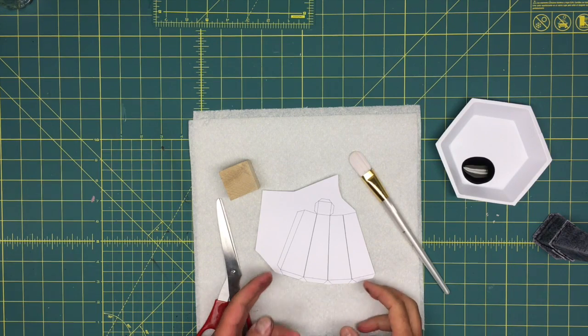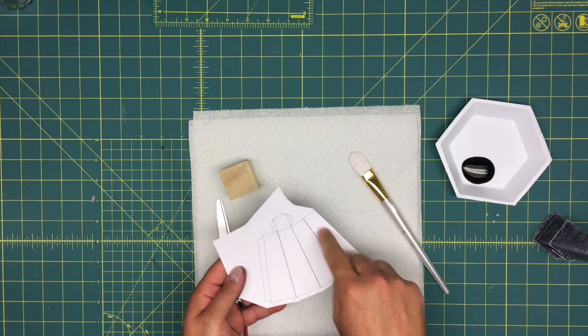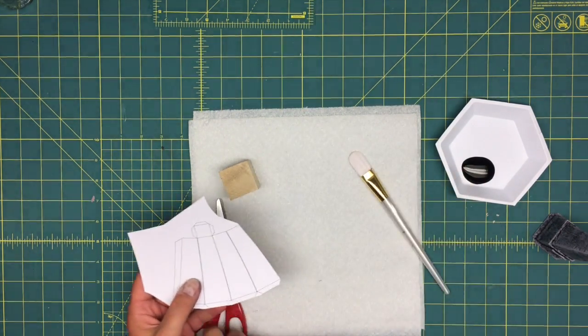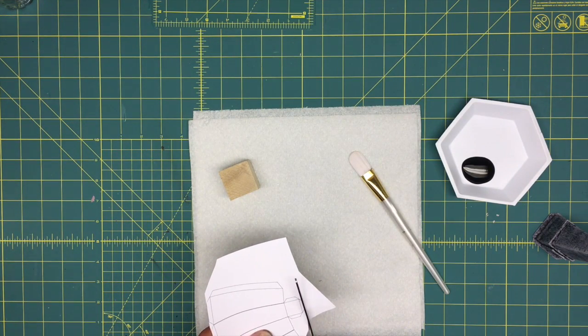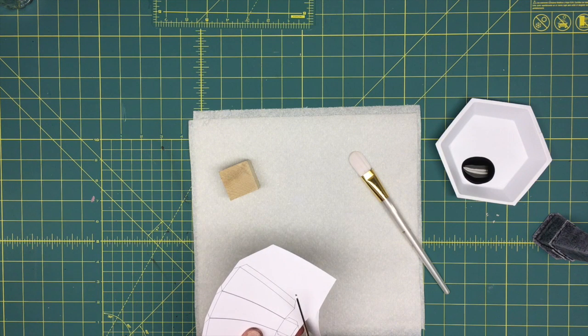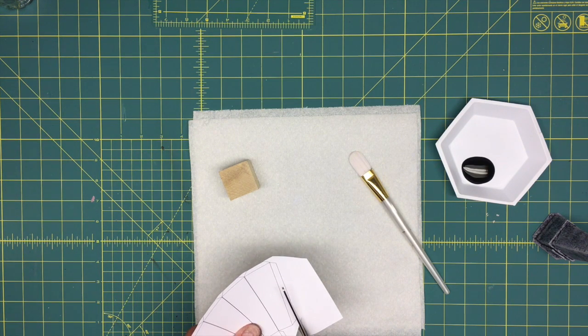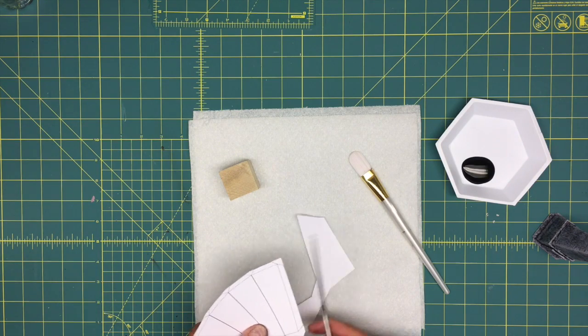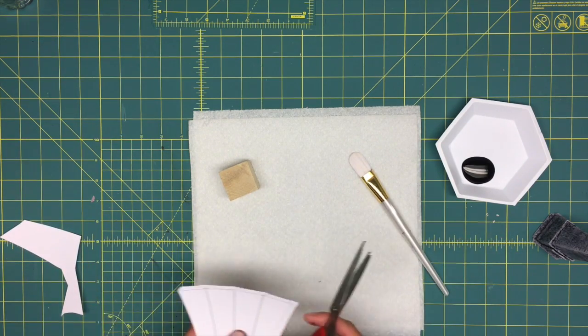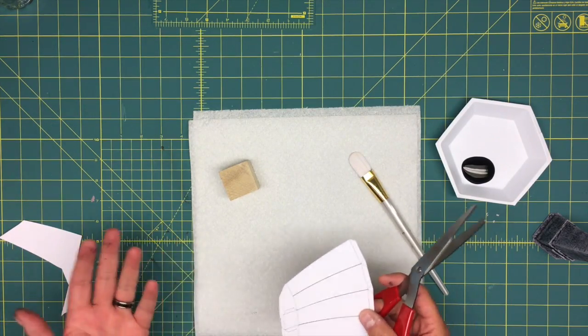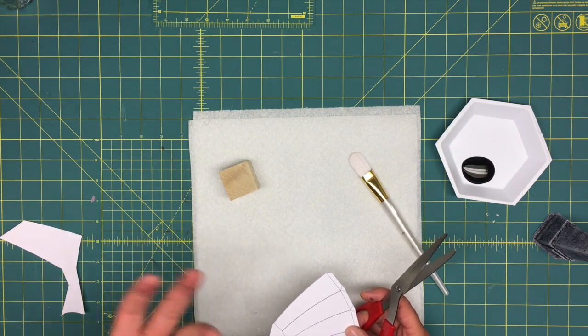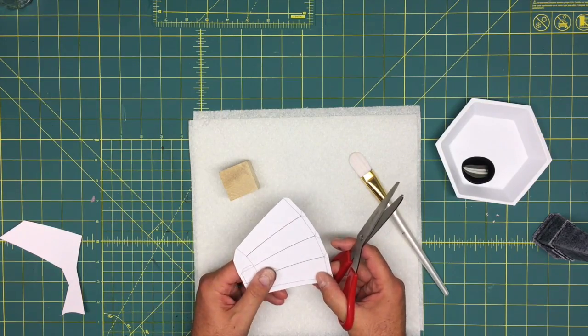The template for this project comes with three of these pyramid shapes per page. I'll include the link to download this in the description for this episode. But you'll want to print it out. I'm printing it out on card stock. You could print it out on regular paper. You could even cut it out and then trace it onto a heavier material like chipboard or maybe the cardboard that comes from a cereal box.